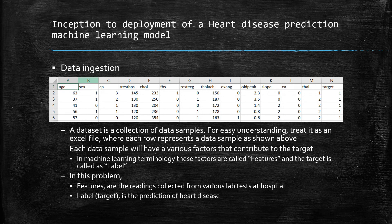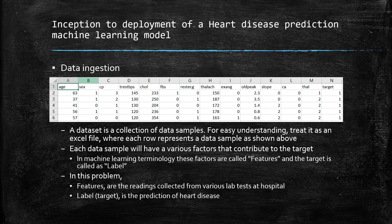We have used the dataset from the UCI machine learning repository. For easy understanding, treat it as an Excel sheet with each row representing a sample of data. Each data sample will have various factors that contribute to the target's value. In machine learning terminology, these factors are called features and the target is called a label.